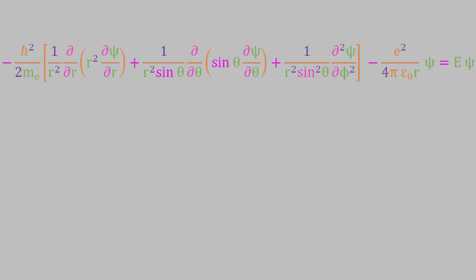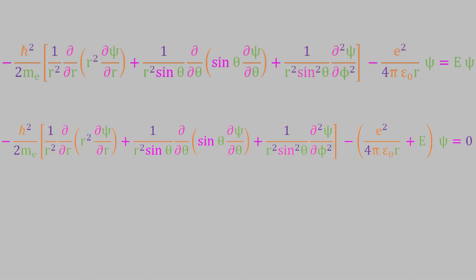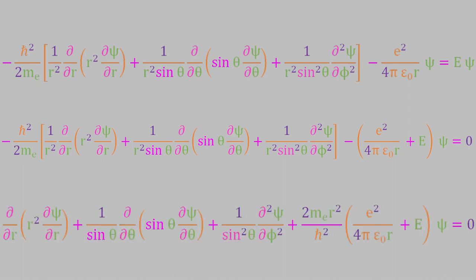First, let's move e-psi to the left side of the equation. Next, we'll get rid of the constant out in front by multiplying both sides by negative 2mr squared over h-bar squared. Believe it or not, this is a much more manageable equation than the one we had a moment ago. Here's why.